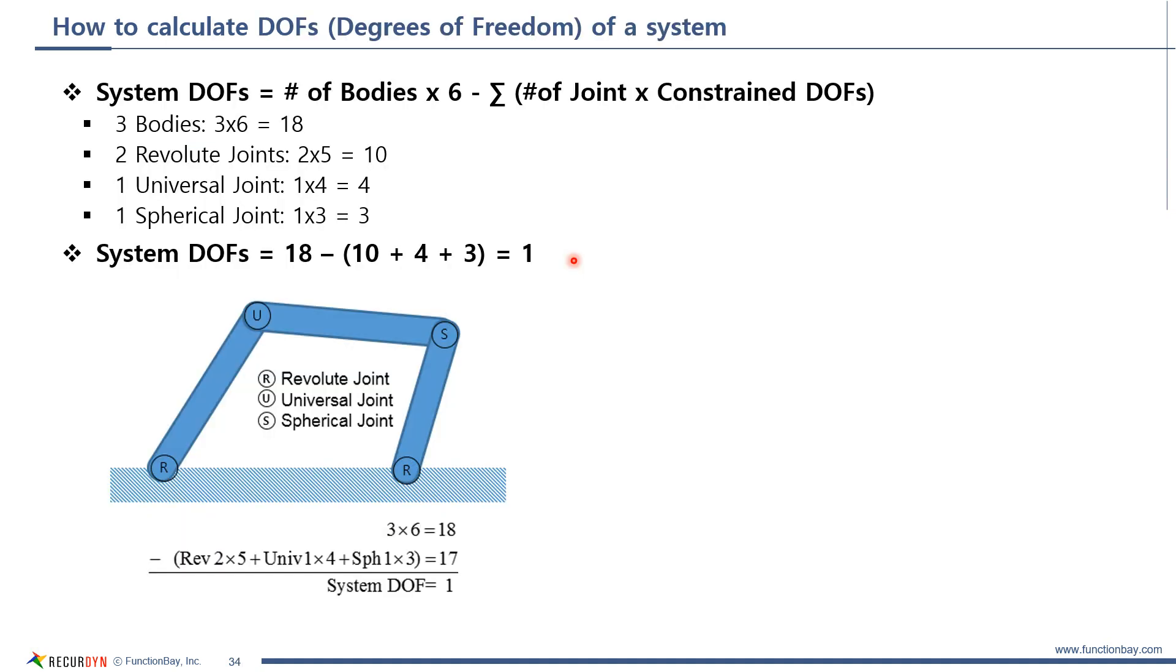This shows how to calculate the degrees of freedom of a system briefly. Each body has 6 DOFs. So, 6 is multiplied by the number of bodies. And the number of joints is multiplied by its constrained degrees of freedom. Then, we can calculate the DOFs of the system, like this. So, DOF of this system is 1.